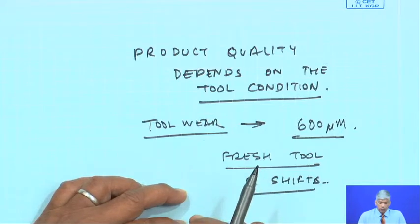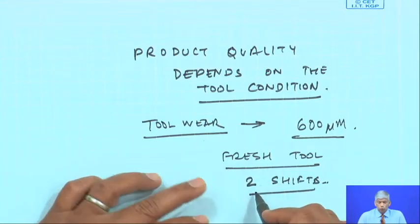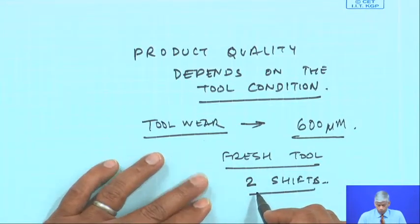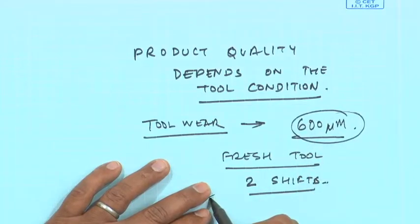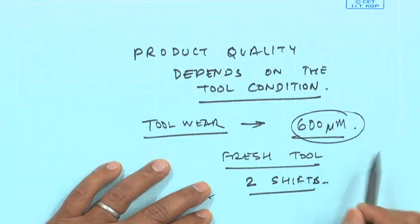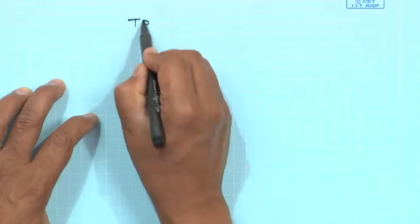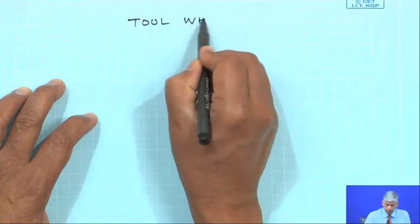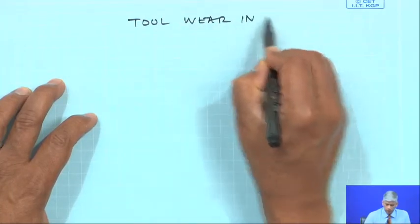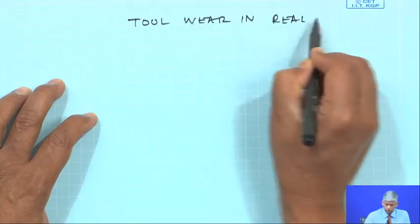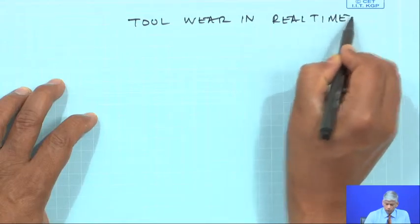But sometimes the tool may be good and may have a lot of remaining life, so you may not be optimally utilizing the tool. To optimally utilize the tool, we need to know its tool wear in real time.